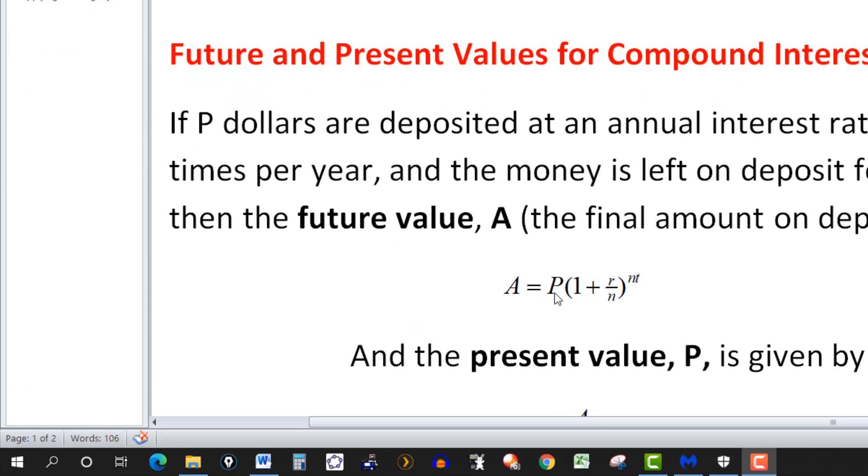P is the present value, or principal, and that value is deposited over a period of T years. R is the given annual rate.